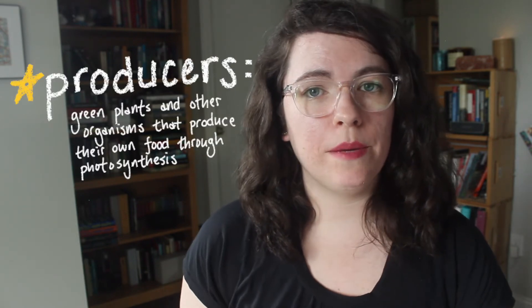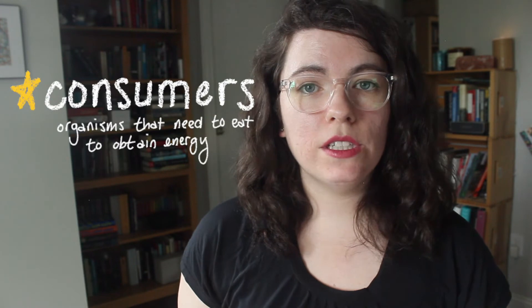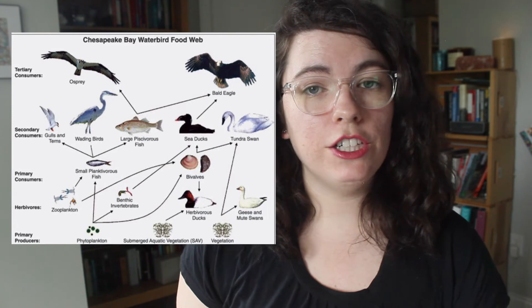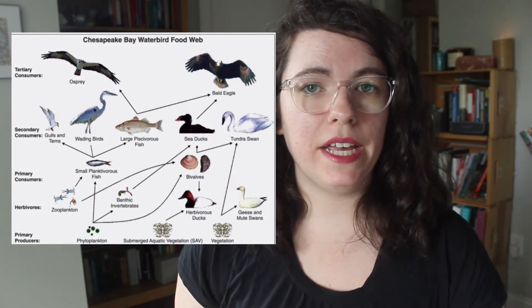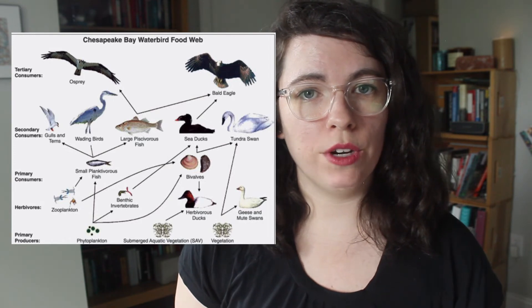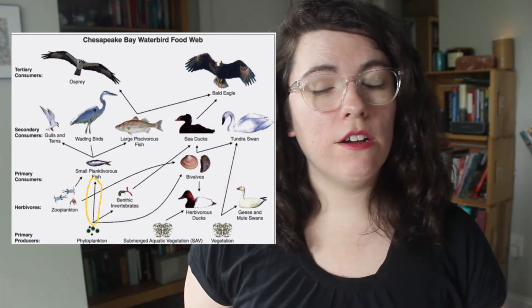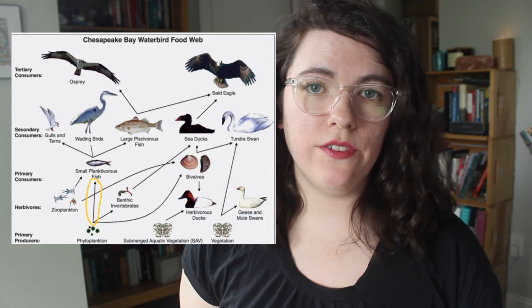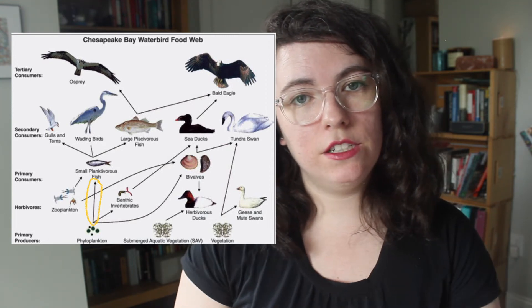A healthy ecosystem contains a diversity of organisms, including both producers and consumers. Producers are green plants and other organisms that produce their own food through photosynthesis. Consumers are organisms that need to eat in order to obtain energy, including consumers that eat producers directly, as well as secondary and tertiary consumers which eat other organisms that eat other organisms. Diagrams like this food web demonstrate how energy moves through an ecosystem. Notice that the arrows represent the movement of energy through the ecosystem, from organism to organism. For example, the arrow from the phytoplankton to the small planktivorous fish indicates that the small fish eats the phytoplankton, which transfers the energy from the phytoplankton to the fish.